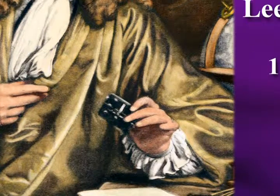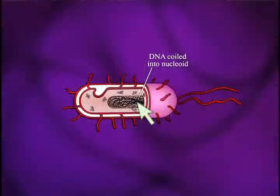Bacteria are mostly extracellular parasites. They do their work outside in the interstitial space between the cells. They're very small, but we can see them with the light microscope. They are prokaryotes, which means they have no distinct nucleus. They have what is called a nucleoid.